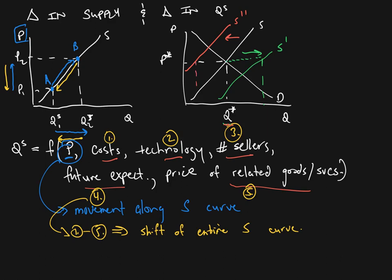At the price P star, they want to sell this amount — we'll call it Q squiggly. Whereas with an increase in supply at that old price, they want to sell more — we'll call it Q hat. So by increasing supply, at every price they want to sell more than they did before. And decreasing supply means at every price, they want to sell less than before. Now those changes are going to have effects on the price, but changes in price itself will cause movement — say from point A to point B — on the existing supply curve, movement along the supply curve.